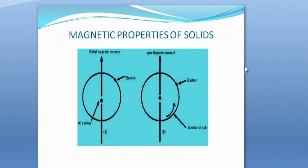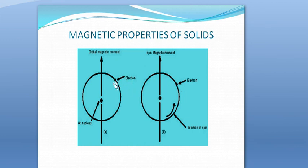The next topic in this unit is magnetic properties of solids. Before we study the magnetic behavior of solids, let's revisit something from class 11th. An electron is a charged body that is never at rest — it constantly moves in its orbital around the nucleus and also spins around its own axis. Because it is a charged body in constant motion, it has an orbital magnetic moment due to its orbital motion and a spin magnetic moment due to its spin motion.